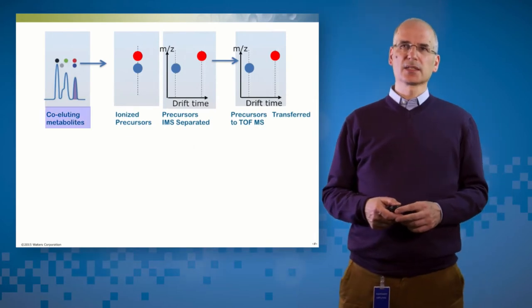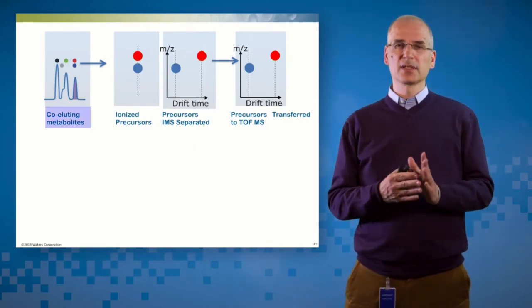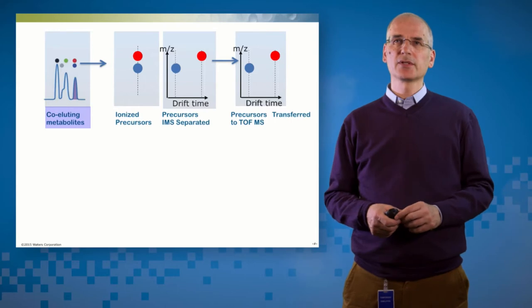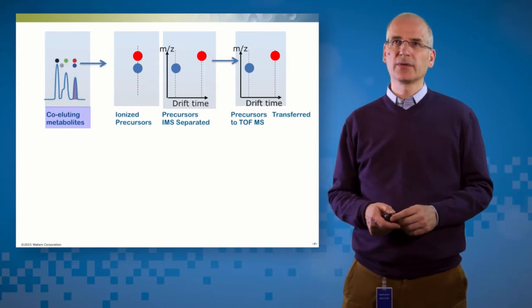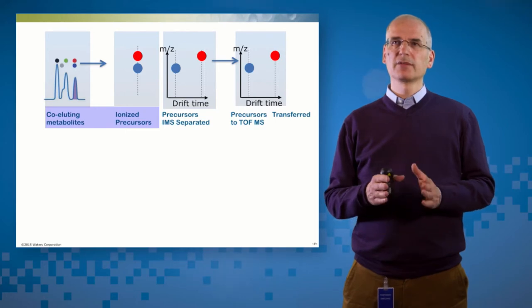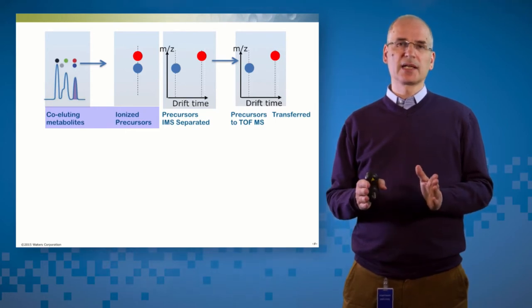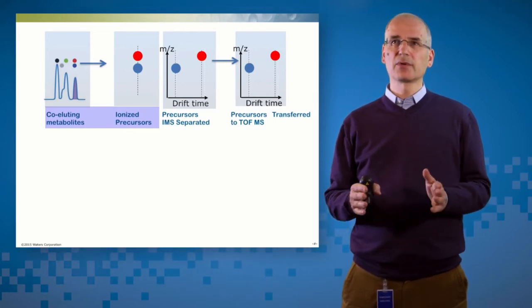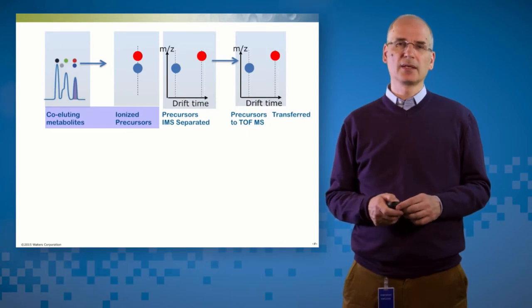So HDMSE works like this. We have metabolites separated by chromatography, but suppose that we have two co-eluting metabolites going into the system. They're ionized in the source, but in the middle of the instrument, we have an ion mobility cell. And in that ion mobility cell, we can separate the components based on their drift time, which is a function of their size and shape.